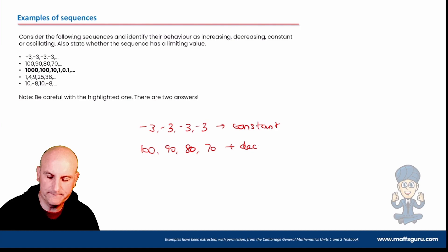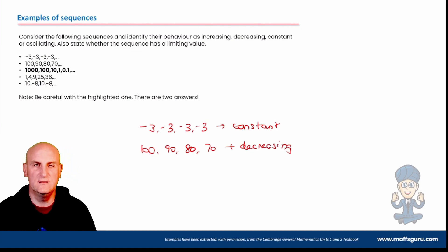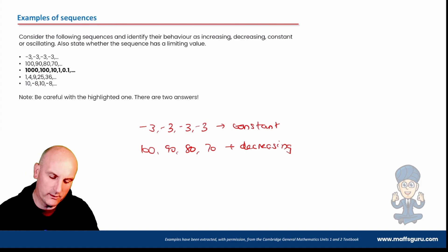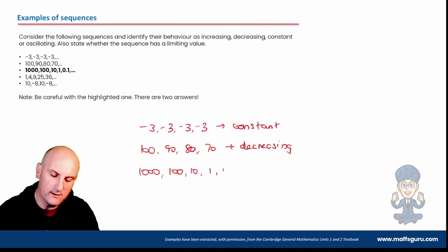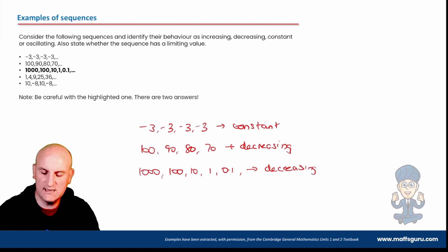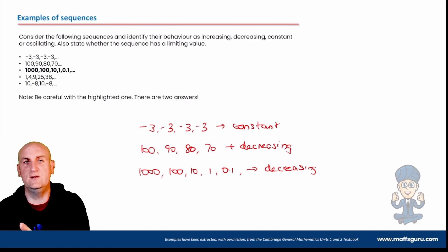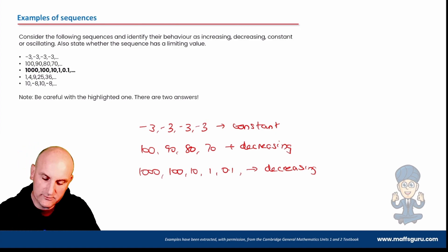Is the sequence 100, 90, 80, 70 going to have a limit? No — because theoretically we could go down to minus infinity and beyond. What about 1000, 100, 10, 1, 0.1? It's definitely decreasing. But is it going to go to a limiting value? Yes — because we'll get to 0.001, 0.0001, getting so small it's effectively going to become 0. So that's decreasing, but it has a limit of 0.